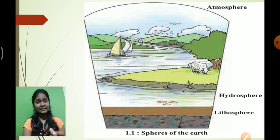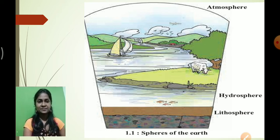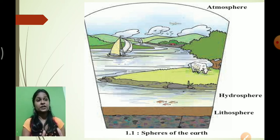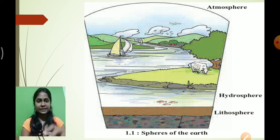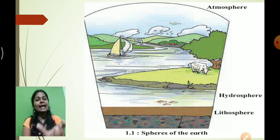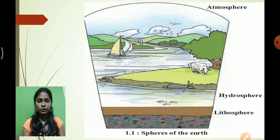In nature, on the Earth, there are three spheres present. As you can see in this diagram: atmosphere, hydrosphere, and lithosphere. Atmosphere means the part of air present around the Earth. Hydro means water, so hydrosphere is the part of the Earth covered by water. Litho means land or soil, so lithosphere is the part of the Earth covered by land.